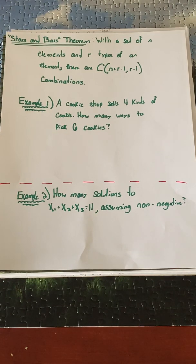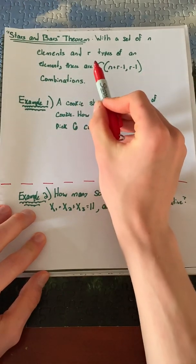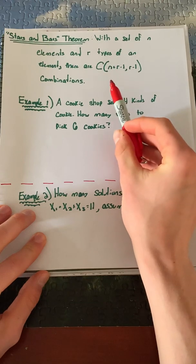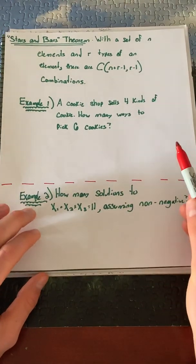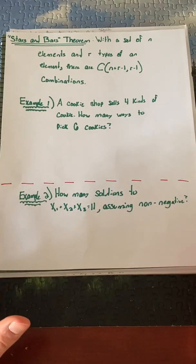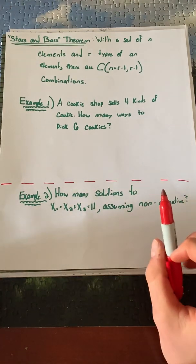It really simplifies these problems and helps solve them much quicker. The theorem states that with a set of n elements and r types of an element, there are C(n+r-1, r-1) combinations. At first that might be confusing, which is why I have example problems to show you exactly how to utilize this theorem.